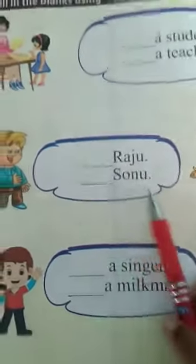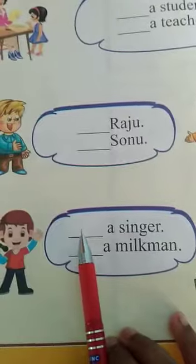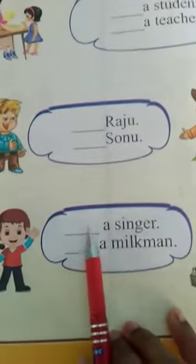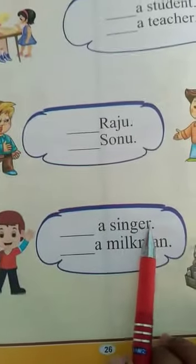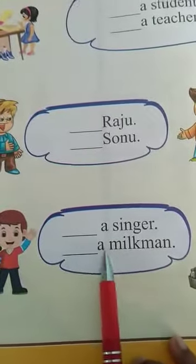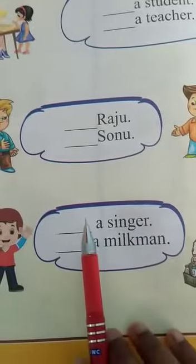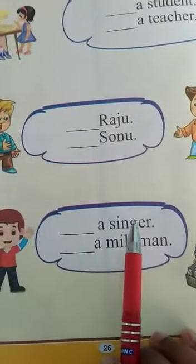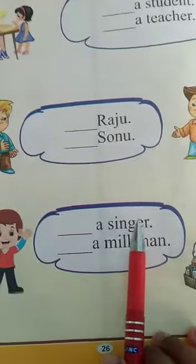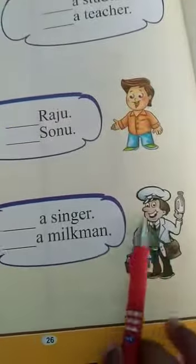Here, then — you are a singer, I am a milkman. Aap eek singer hai, aur maai eek milkman hoongi — ye bool raha hai. Thickhe.